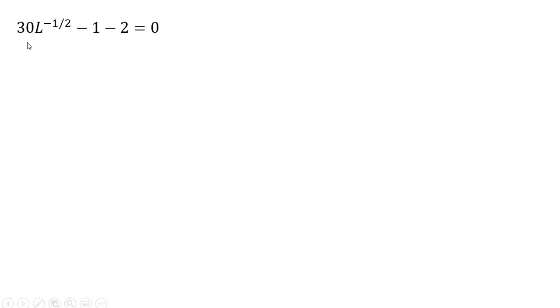Rewriting that last step, and now solving for L. Moving this L to the minus 1/2 into the denominator and multiplying through by L to the 1/2 power. And now dividing through by 3 and squaring both sides. The firm will use 100 units of labor, and since L equals K, the firm will use 100 units of capital.